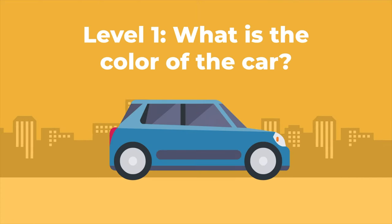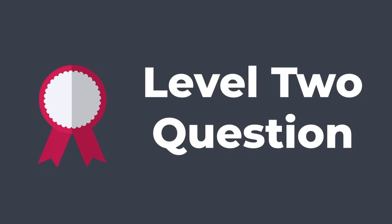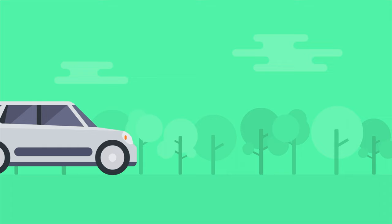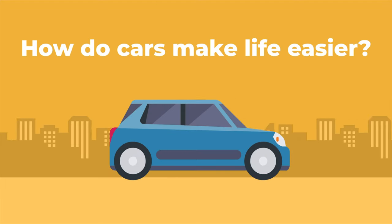For example, a Level 1 question just asked us to say the color of the car. But a Level 2 question would sound something like this: How are these two cars similar and different? How do cars make life easier?